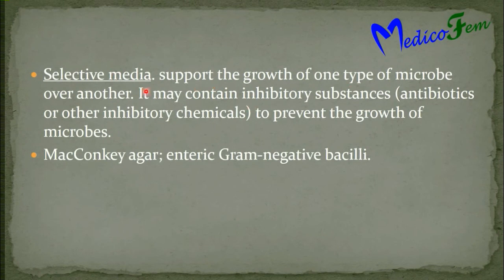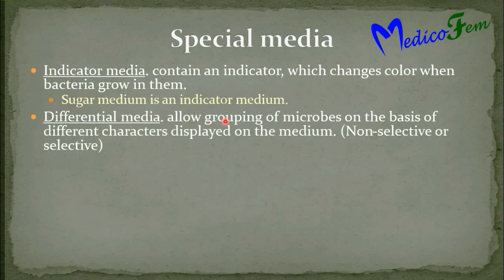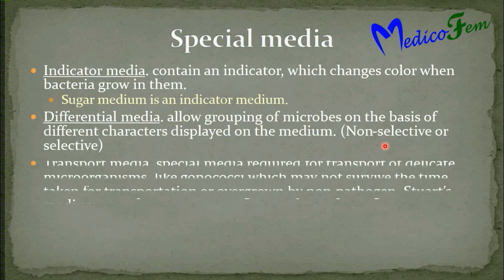Selective media supports the growth of one type of microorganism over the other and contains inhibitory substances like antibiotics or other inhibitory chemicals that prevent the growth of non-required microorganisms. Example is MacConkey agar, which is selective for enteric gram-negative bacilli. Indicator medium contains an indicator which changes the color of the medium when bacteria are grown. Example is sugar medium. Differential media allows grouping of organisms on the basis of different characters displayed on the medium; it can be non-selective or selective. MacConkey agar is also a differential medium.